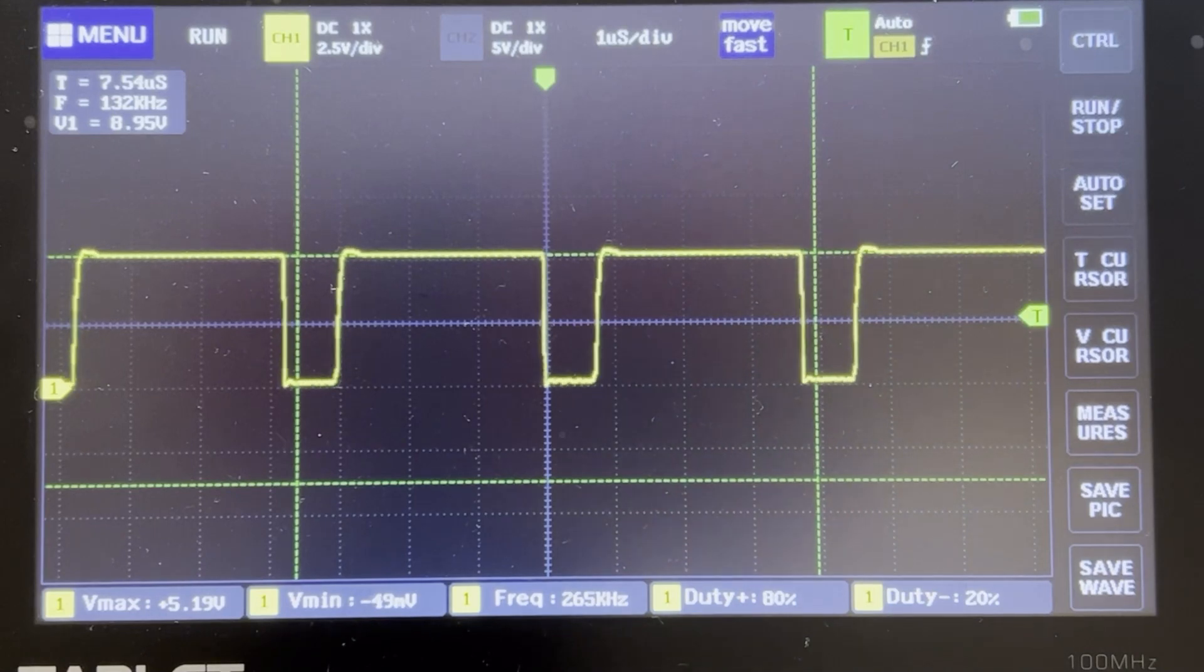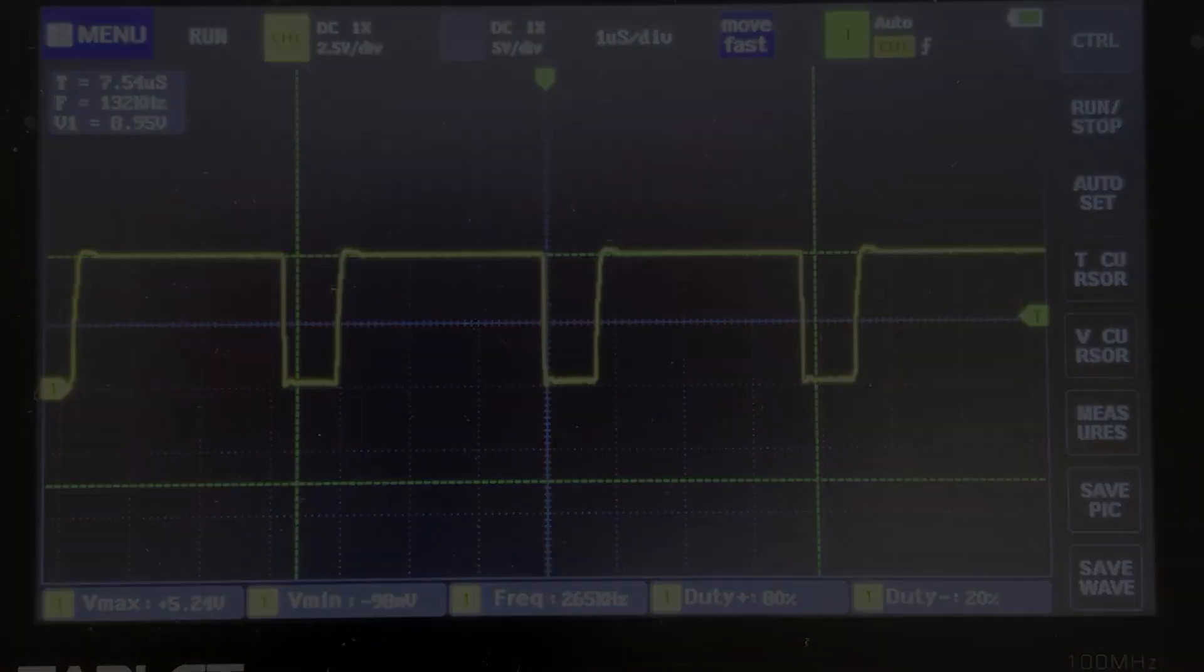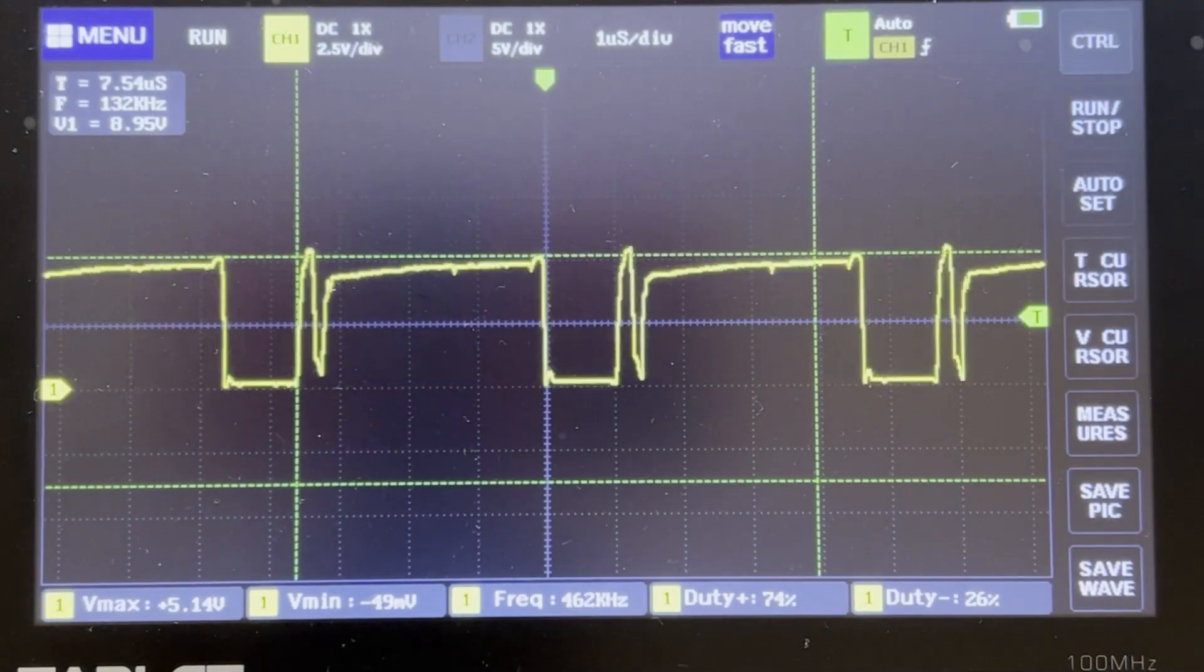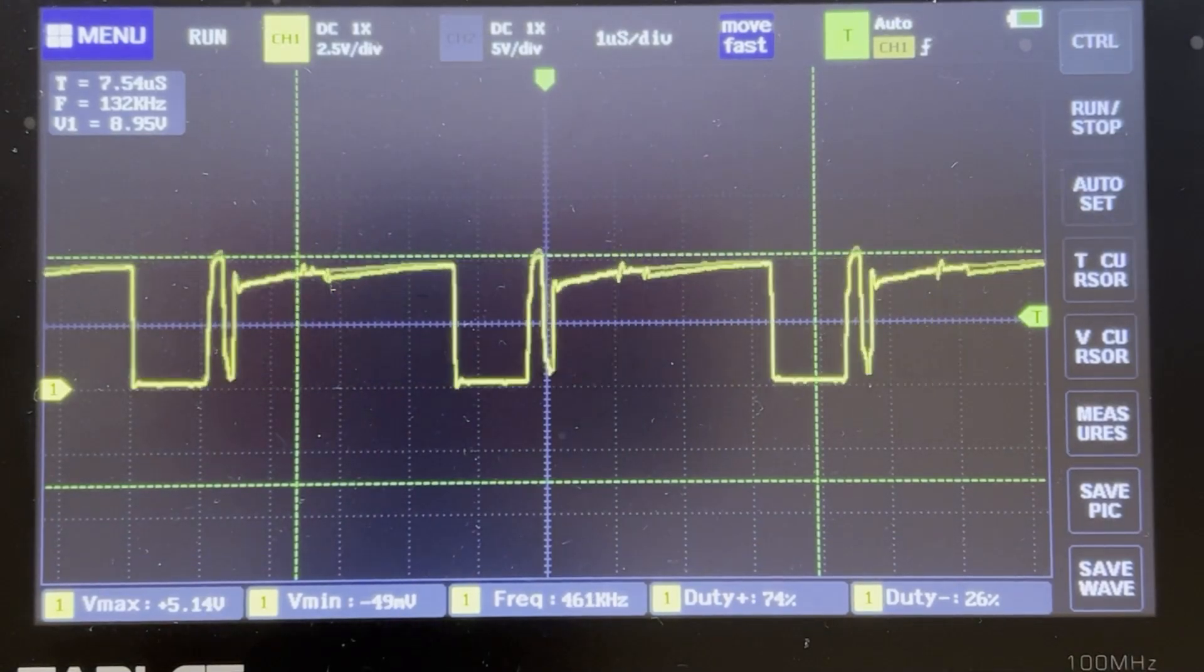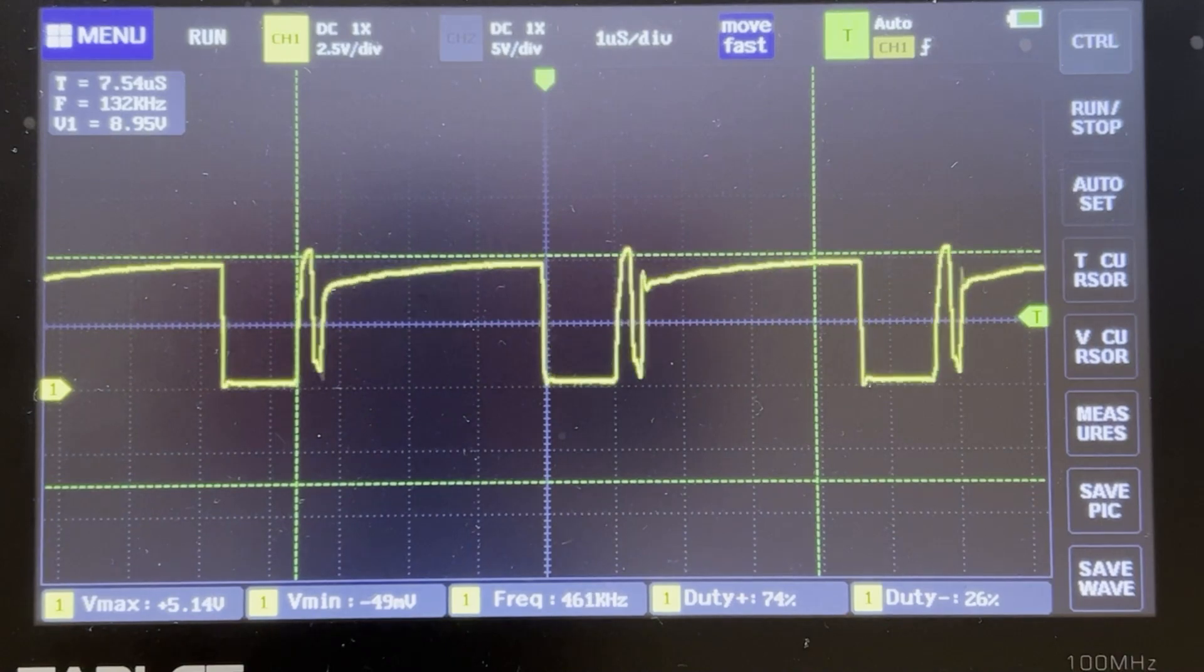Let me try some smaller resistors and see what happens. If you look here, we get a frequency of 461 or 462 kilohertz, but it's definitely not usable for a clock because of how messy the signal is.